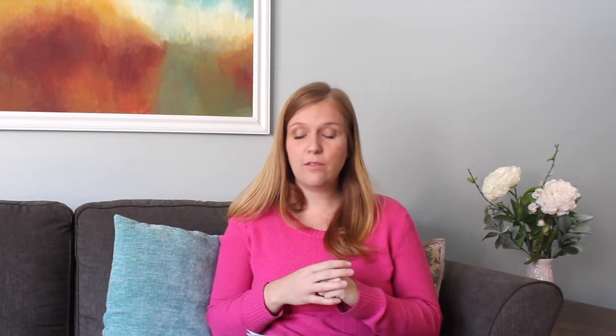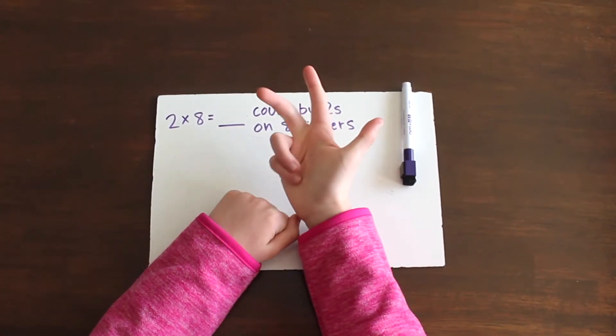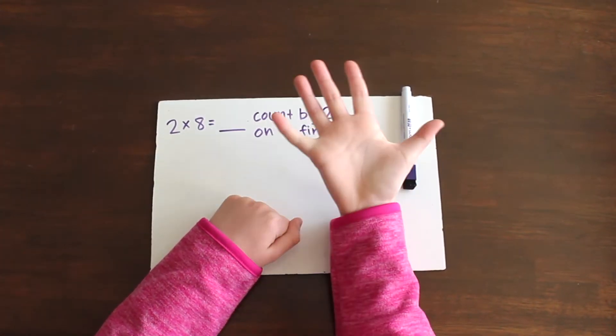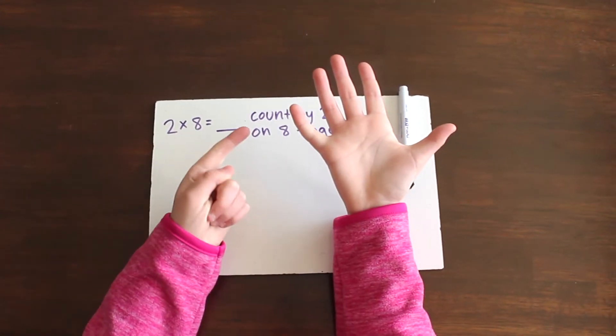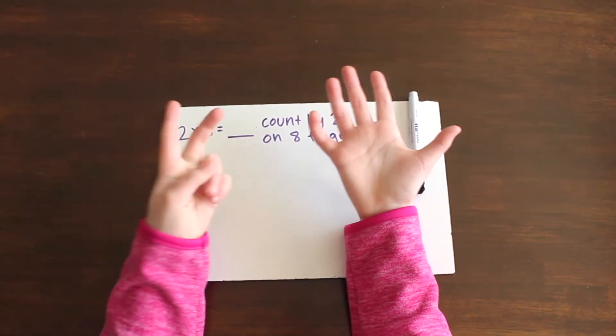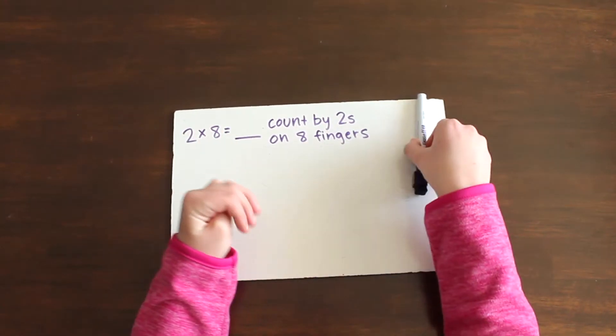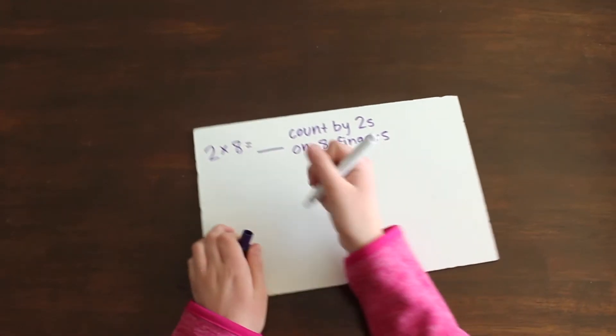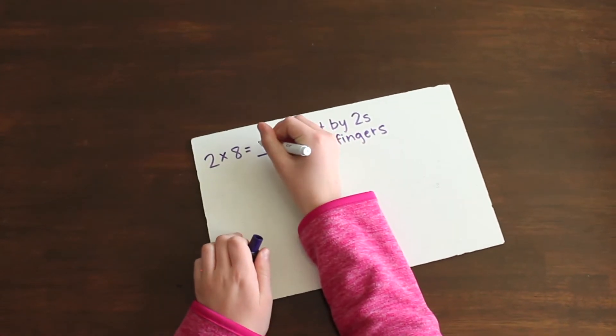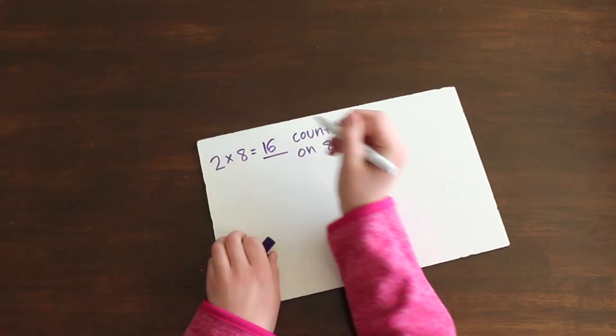I list out different ways to use your fingers to multiply. The first one is count-bys. A lot of kids learn to count by twos, fives, and tens really fast and easily, so they can use their fingers. For example, if they had an equation like two times eight, they would count on their fingers by twos eight times: two, four, six, eight, ten, twelve, fourteen, sixteen.